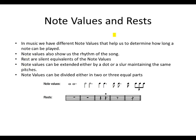In music, we have different note values that help us determine how long a note can be played. Note values also show us the rhythm of the song. So the rhythm of the song, they may say that it's a swing rhythm, or maybe it's a straight rhythm. But the note values will help us exactly to know which notes to play and for how long, whether short or long. Those are called note values.